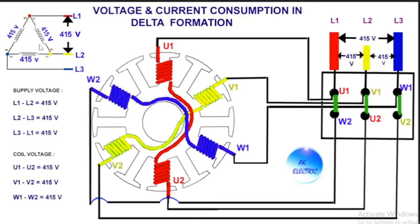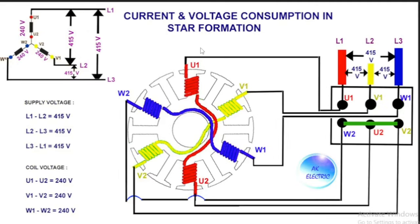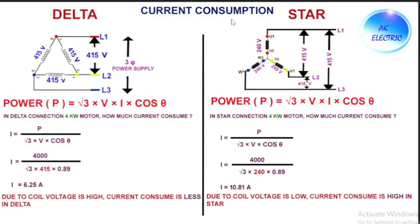In delta, that will be different. In delta there is no neutral point, so the same supply voltage will be measured on the coil side also. If you measure between U1 and U2 in delta, you will find the same 415 volts that you gave to the supply. Simply: in delta there is no neutral, so supply voltage and coil voltage are the same; in star, supply voltage and coil voltage are different because star formation has a neutral point.